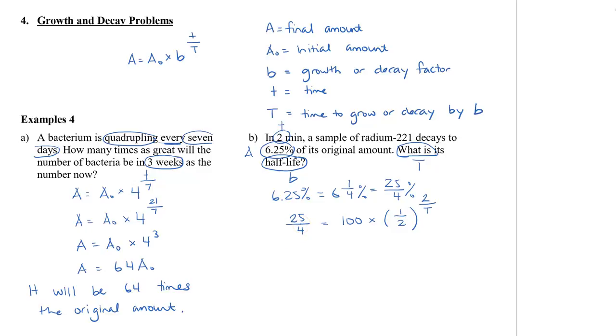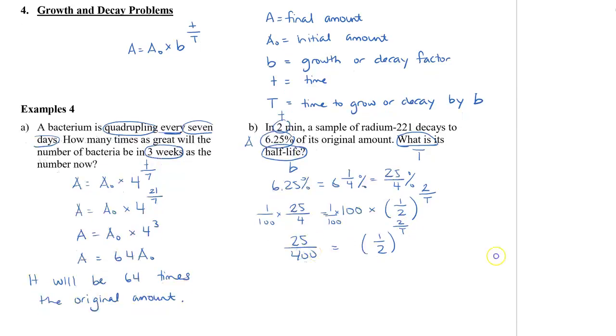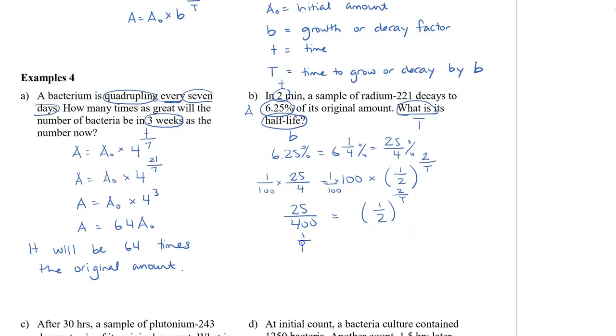First thing, we need to isolate our base. So we need to get rid of the coefficient here. We're going to times 1 over 100 on this side too. So we now get 25 over 400 equals half to the power of 2 over T. And 25 over 400 can actually reduce to 1 over 16 equals 1 half to the power of 2 over T.